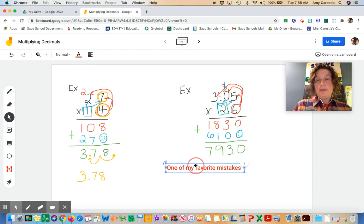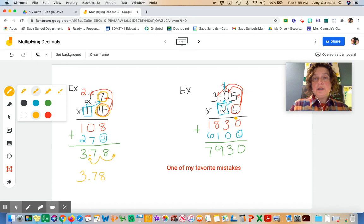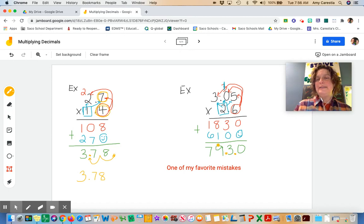And they will actually use two decimals, so they'd say, okay, I'm going to bring this one down, and then I'm going to bring this one down. And they would have 79.3.0. We don't have two decimals in our numbers. So again, one of my favorite mistakes is you only need one decimal point in your answer. You do not just bring down the decimal points.